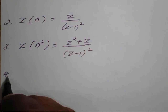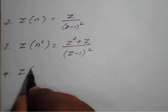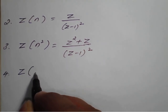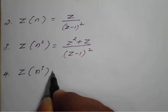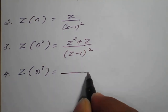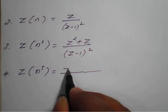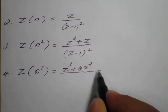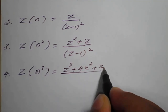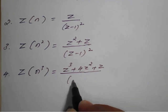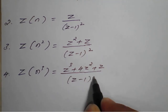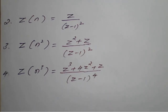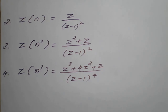The fourth one is: Z transform of n cube is equal to Z cube plus 4Z square plus Z, divided by (Z minus 1) whole raised to 4. So these are the standard Z transforms.